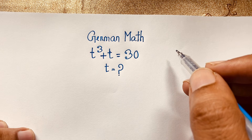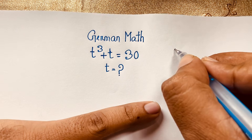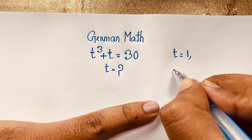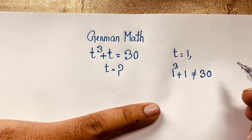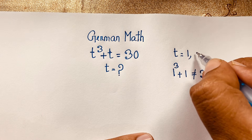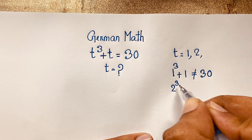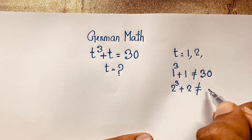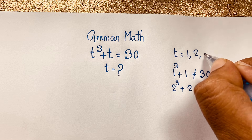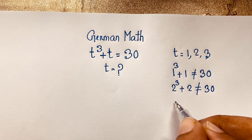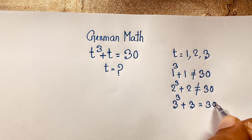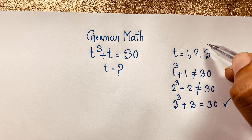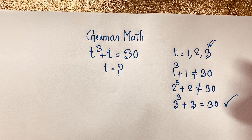We have solved this math question step by step. First, if you think t is equal to 1, then 1 to the power 3 plus 1 is not equal to 30. Then if t is equal to 2, then 2 to the power 3 plus 2 is not equal to 30. Then if t is equal to 3, then 3 to the power 3 is 27, plus 3 is equal to 30. Both left hand side and right hand side are equal, so t is equal to 3. This is our final answer in this cubic equation.